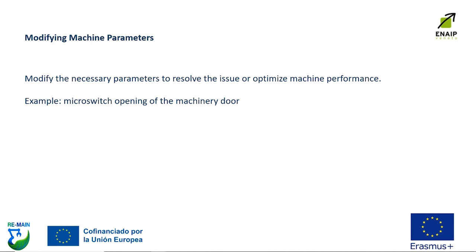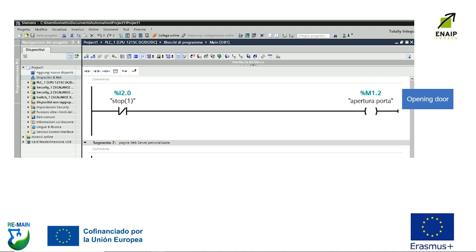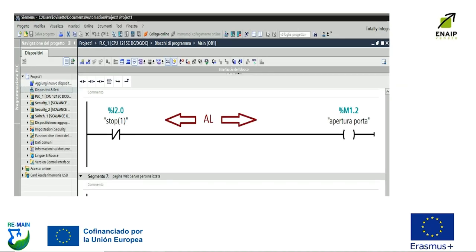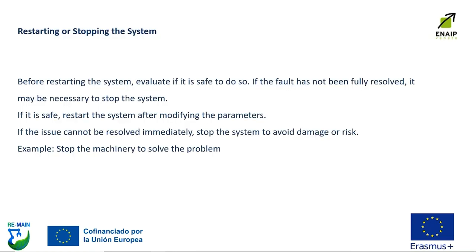How to modify machine parameters: sometimes it will be necessary to modify the parameters to resolve the issue or optimize machine performance. In the following slides, you have an example — a micro switch opening of the machinery door.